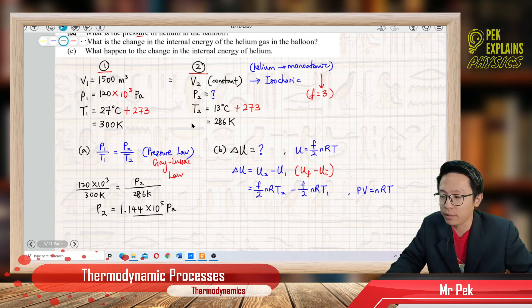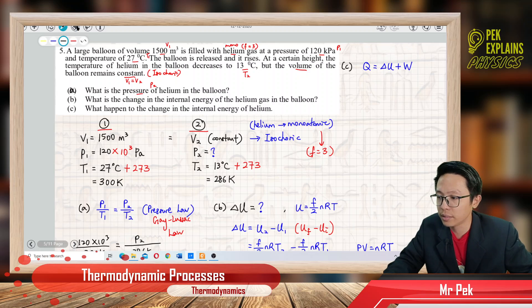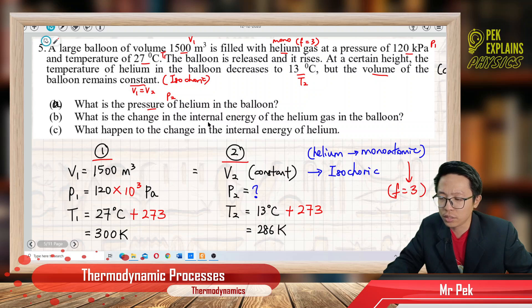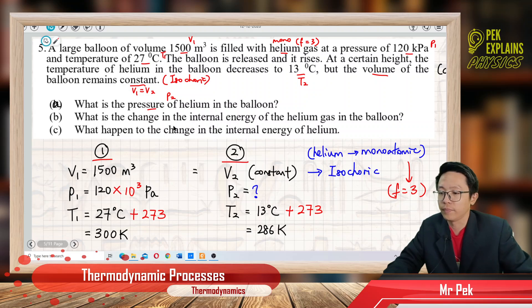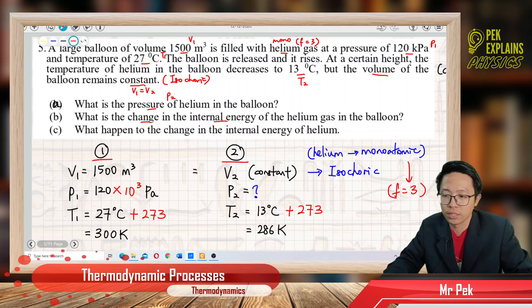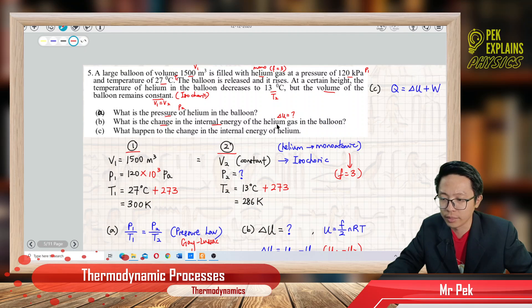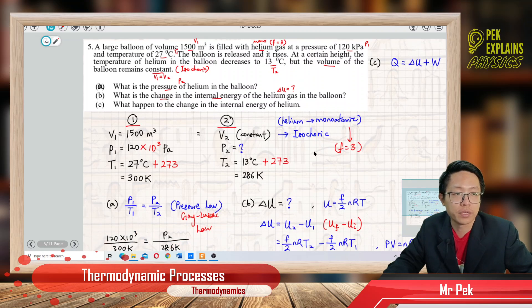Now for part B: what is the change in internal energy of the helium in the balloon? This question needs us to find delta U — the change in internal energy of helium. Helium is a monoatomic gas, so the degree of freedom is 3 only.